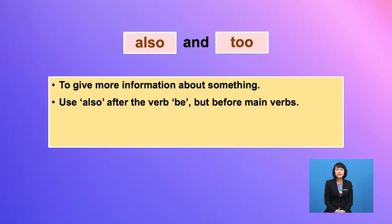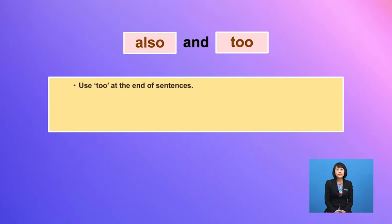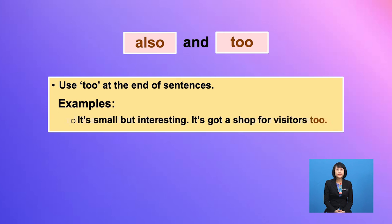Look at this example: 'You could also meet characters from the books.' We use 'too' at the end of sentences. For example: 'It's small but interesting. It's got a shop for visitors too.'